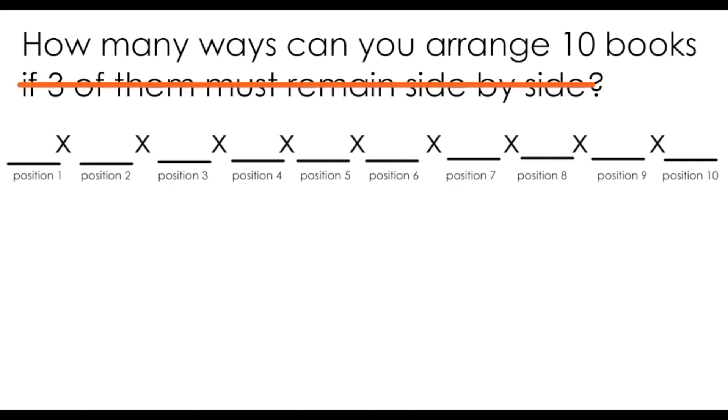Now if I didn't have the stipulation of three of these books having to remain side by side, this would be a pretty simple problem. I have 10 books in total, so looking at the first position, I can fill it with any of the 10 available books. Having used one book to fill the first position, I now have 9 available books for the second. I could continue in this way for positions 3 to 10.